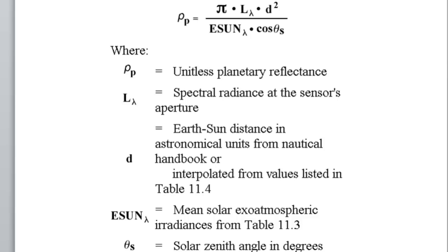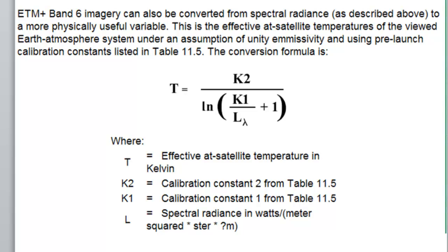From each pixel value we can calculate spectral reflectance, which ranges from 0.0 to 1.0, adjusting for sun angle above the horizon. We'll calculate spectral reflectance using Landsat 8 OLI data this week. We can also calculate radiant temperature from the thermal band — with TM or ETM+ that's band 6. We'll calculate radiant temperature of an area in the Alaska Range using Landsat 8 TIRS, which gives at-satellite radiant temperature in degrees Kelvin. To convert to Celsius, subtract 273.